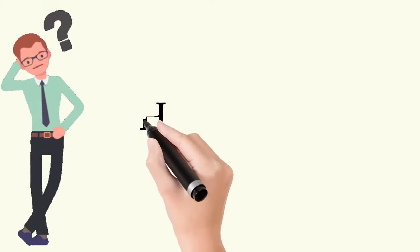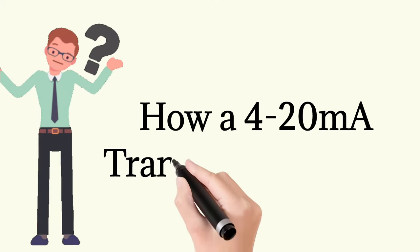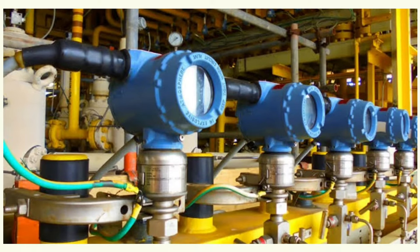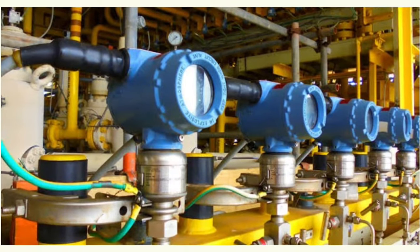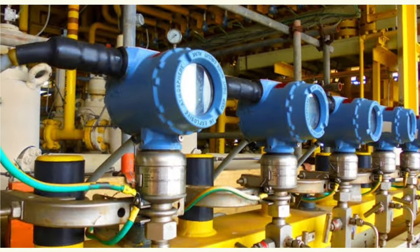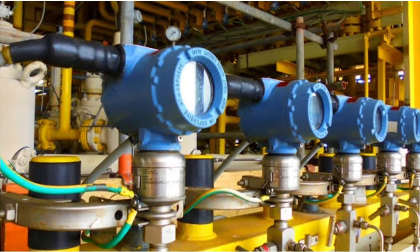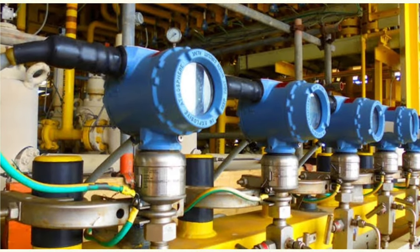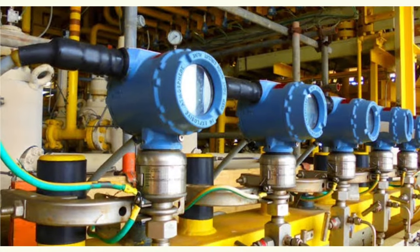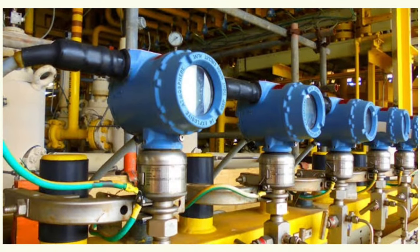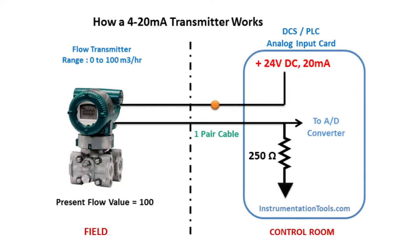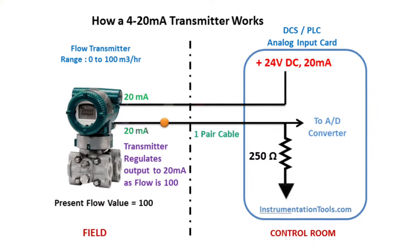In this video we will discuss how a 4 to 20 milliampere transmitter works. A sensor is an input device that provides a usable output in response to the input measurant. A sensor is also commonly called a sensing element, primary sensor, or primary detector. The measurant is the physical parameter to be measured. An input transducer produces an electrical output that is representative of the input measurant.